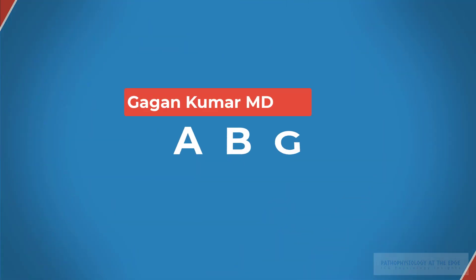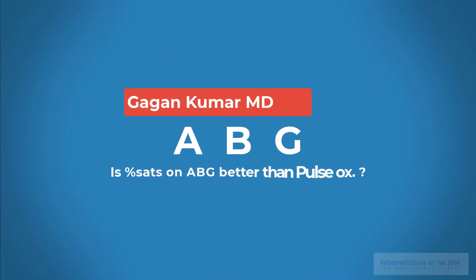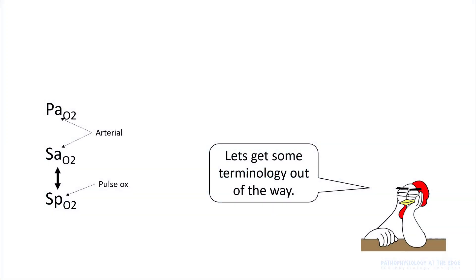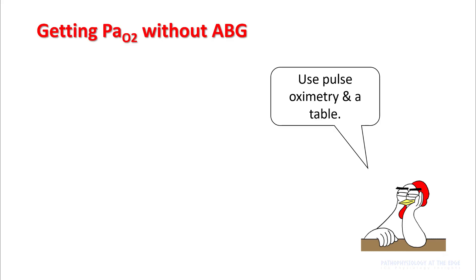Hello everyone. Today we will be talking about how to figure out PO2 if you do not have an ABG available to you. So let's get some terminology out of the way. The A in PO2 and SaO2 stands for arterial. In pulse ox, your saturations are denoted by SpO2.